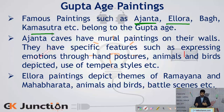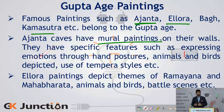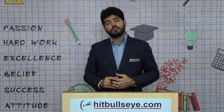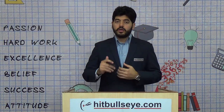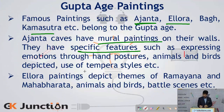Talking about Ajanta cave paintings, these are one of the most important evidences of the Gupta Age that we have today. These are mural paintings — done on a large scale on walls — and have specific features such as expressing emotions through hand postures, themes of animals and birds, and most importantly the use of the tempera style of painting.